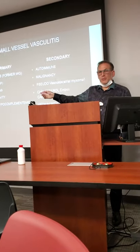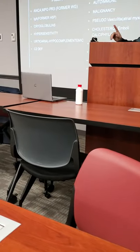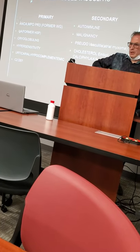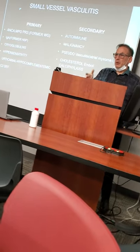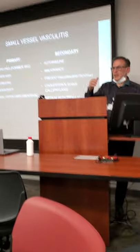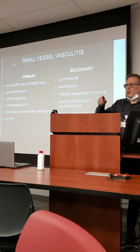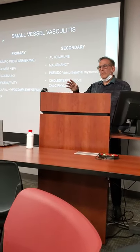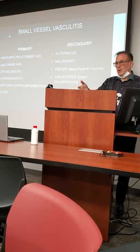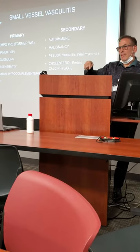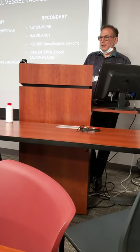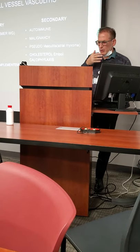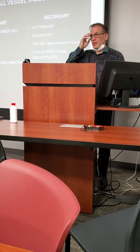Calciphylaxis resembles vasculitis — you get big, horrific ulcerated areas, and sometimes you can actually visually see the calcium. The calcium-phosphate product is typically more than 72, normally in renal patients. I had a patient here — a diabetic whose calcium-phosphate product wasn't dramatically off — but on biopsy they had calciphylaxis, which I published in the Journal of Clinical Rheumatology.